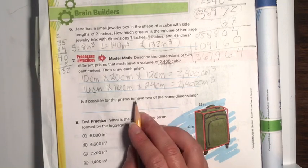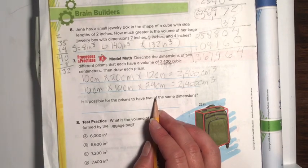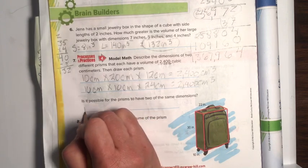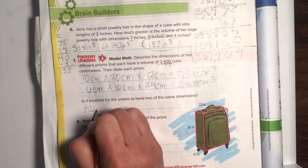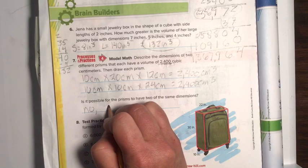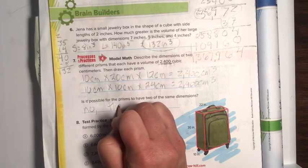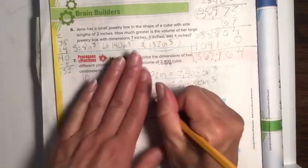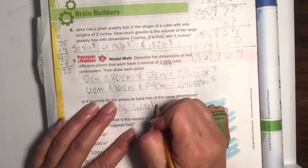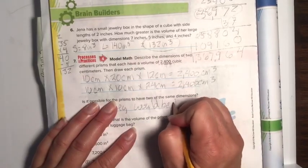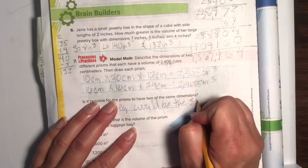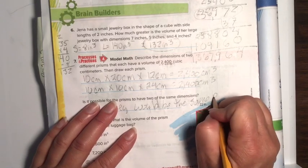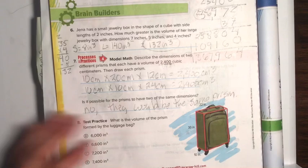Is it possible for prisms to have two of the same dimensions? The answer is no. Oh, because if they had the same dimensions, they would be, oh, heavens to Betsy's, would be the same prism. All right. There we go. All right.